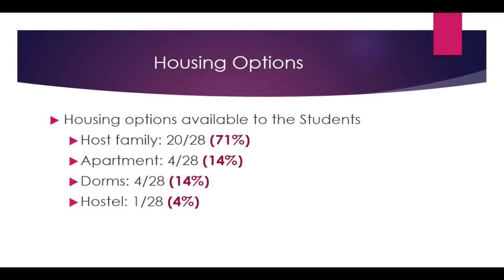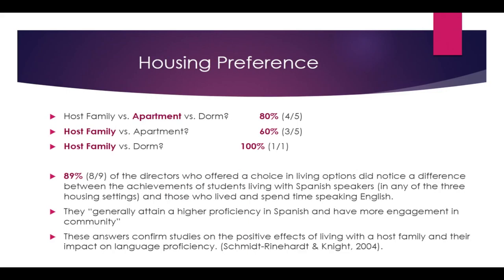Regarding housing options, 71% of the programs offered host family, 14% apartments, 14% dorms, and 4% hostels — with a mix of offering all three, only two, or just one. Only 11 of the 28 programs offered the student a choice. Five offered all three — host family, apartment, and dorm — and when all three were offered, the student preference was to live in an apartment. Five offered a choice between host family and apartment, and 60% of those students preferred the host family. Only one program offered the option between a host family and a dorm, and the preference was to live with the host family.